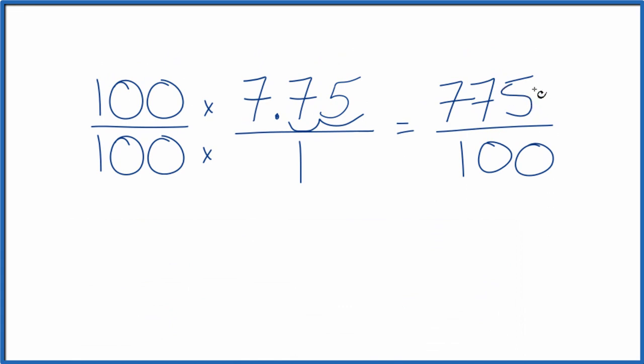So 25 will go into 775 and 100 evenly. So 775 divided by 25 equals 31, and then 100 divided by 25 is 4.